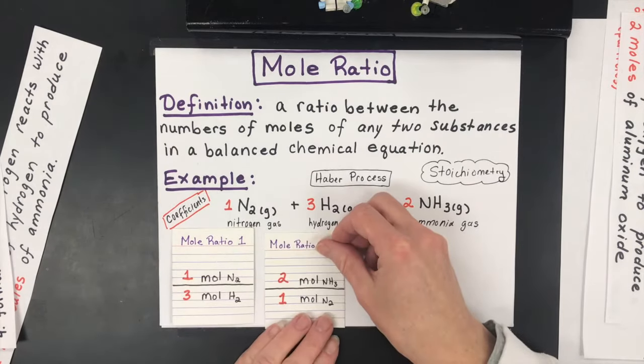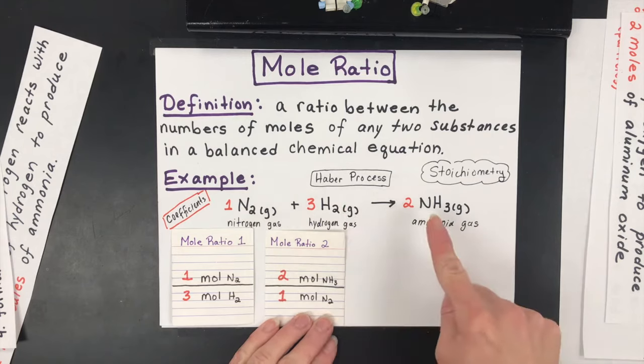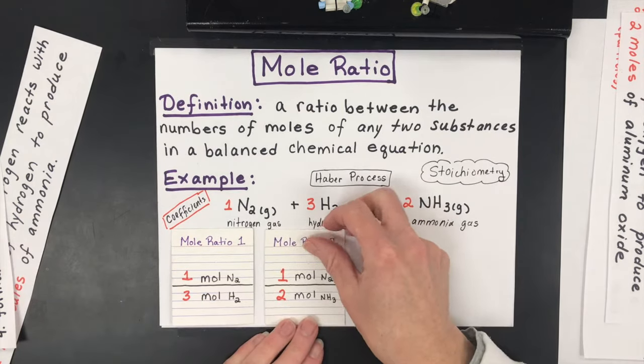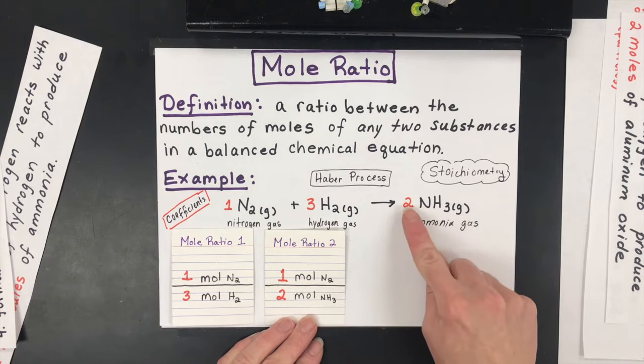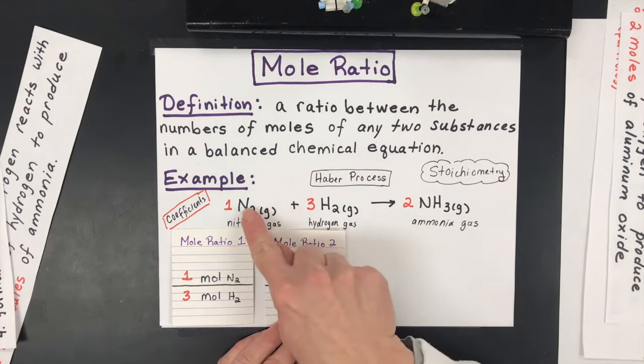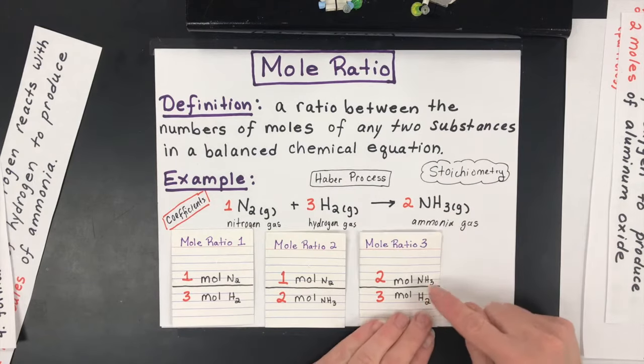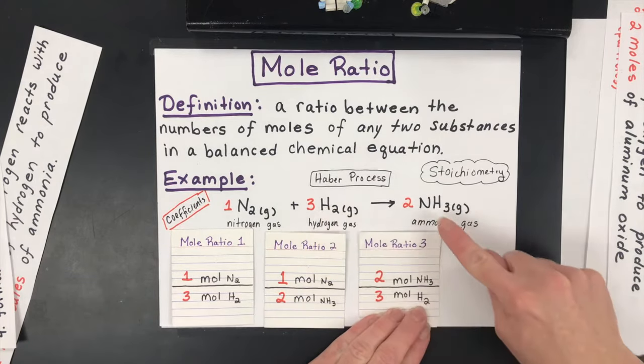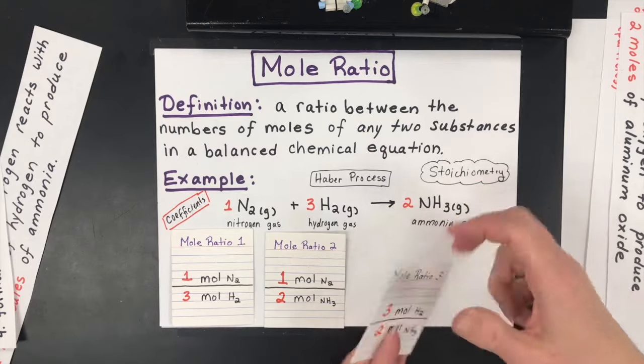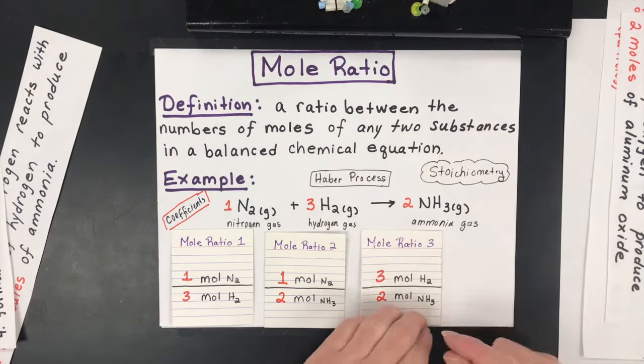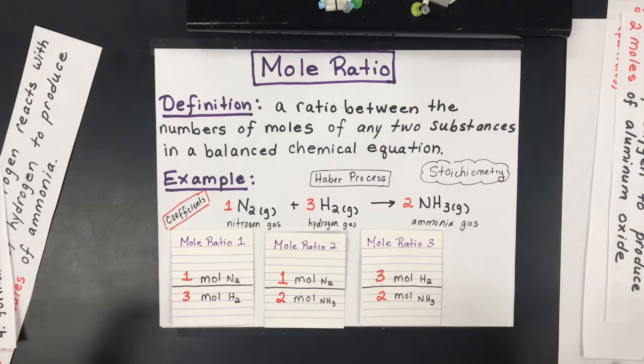Mole ratio two is saying that for every one mole of nitrogen I'm going to produce two moles of ammonia. And then the reciprocal of that is saying that if I made two moles of ammonia I would have used one mole of nitrogen. Last but not least, if I start with three moles of hydrogen I'll make two moles of ammonia, or if I make two moles of ammonia I would have used three moles of hydrogen. So those are what are called mole ratios.